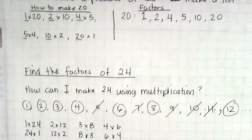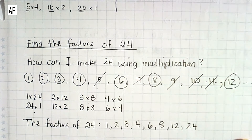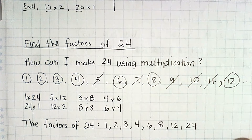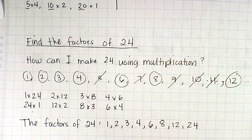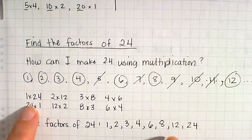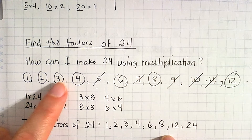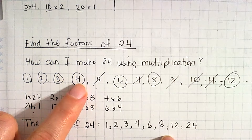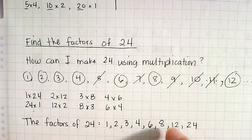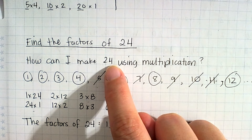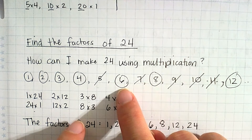Let's find all of the factors of 24. I started with my numbers 1, 2, 3, and so on to figure out which I could use. I can do 1 times 24. Since 24 is an even number, I can also use 2: 2 times 12 gives me 24. 24 can be divided by 3, so 3 times 8 gives me 24. 4 times 6 is 24. I can't use 5 because 24 doesn't end with a 5 or 0. 6 we already used, so once numbers start repeating I know I've found all my factors.